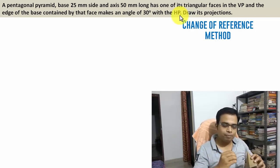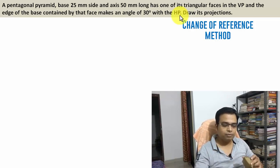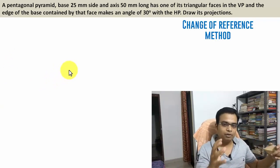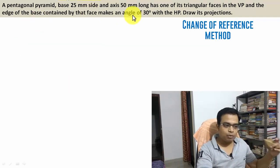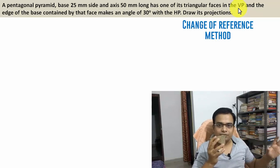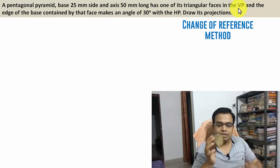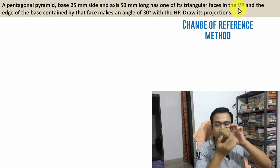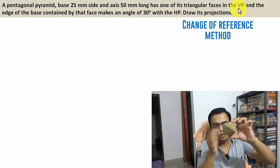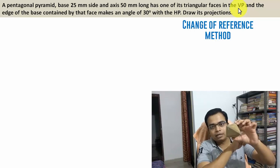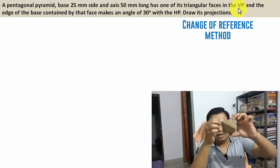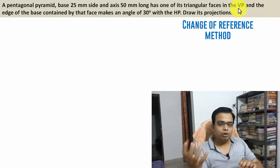For any problem based on projection of solids, either you will be given the axis inclination, or you will be given some other condition — generator in HP or VP, or triangular face in HP or VP. In this problem we have been given: triangular face in the VP. So our initial assumption will be that the entire solid is resting with its base on the VP itself — that's condition number one. And I've kept that edge perpendicular to the XY line, because that's the edge which will eventually make an angle of 30 degrees with the HP in step three.